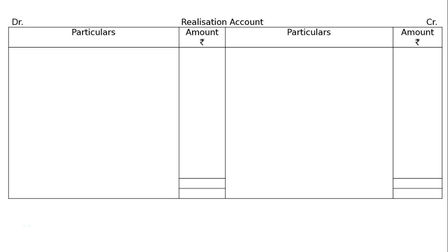The first line of the question is: A and B are partners in a firm, sharing profits and losses in the ratio of 3 is to 2. The last line is: Prepare Realization Account, Partners Capital Account, and Bank Account.